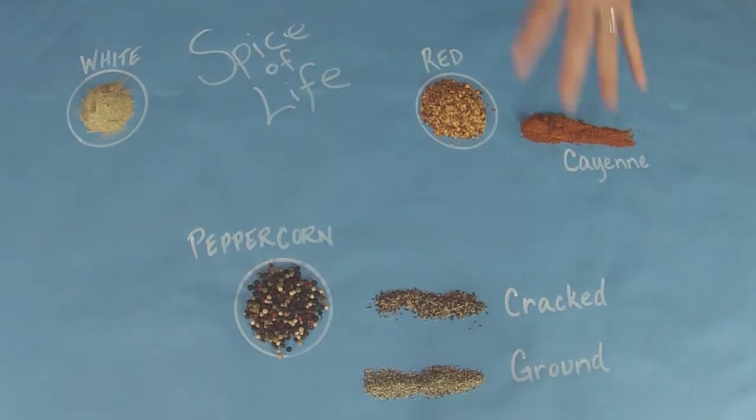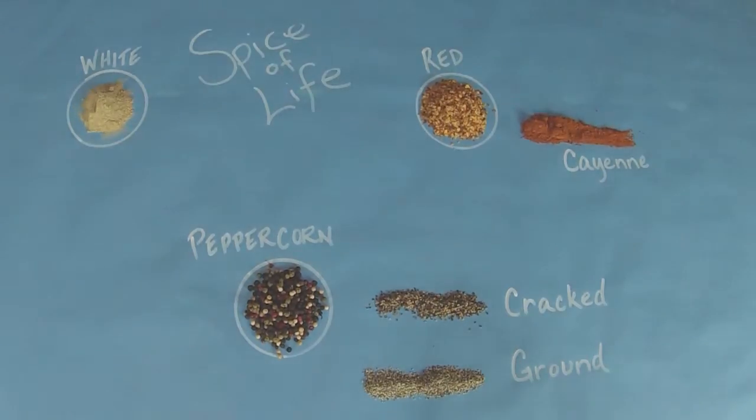I know about black pepper and cayenne, but can you help me understand the intensity of the flavors in the different types? White pepper is a little more intense than black pepper. Black pepper is a little more subtle. Your heat and flavor is going to come from your red pepper — when you're looking for that hot, spicy flavor, that's where you go.